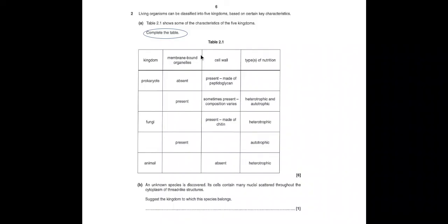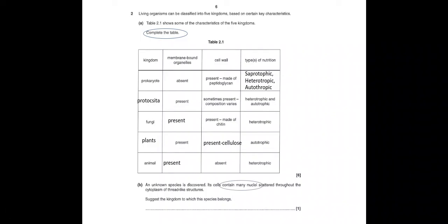As I keep telling you, underline and highlight keywords in the question — here I've circled 'complete the table.' Pause the video and have a go. The answers: the first could be Prokaryotae. Because the cell wall is made of various compositions, that's Protoctista. We know fungi are eukaryotes so they have membrane-bound organelles. By elimination, plants are next — we know they have a cellulose cell wall. Animals also have membrane-bound organelles present.